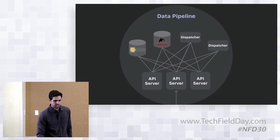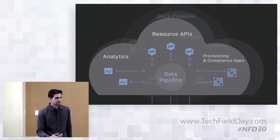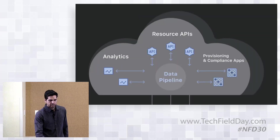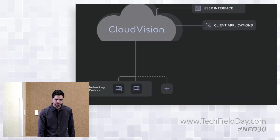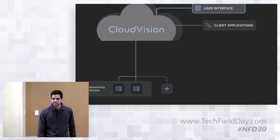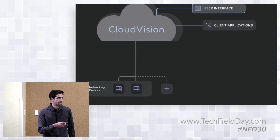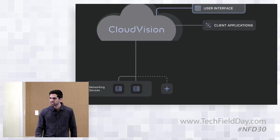For example, our analytics might process a routing table update, create an event, and then send it back into the data pipeline. That same data pipeline is what the user interface connects directly to — and that's how we display the information to the user. All of this, from storage to processing to being shown to the user, feels really instantaneous from the end user's perspective.